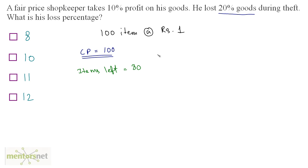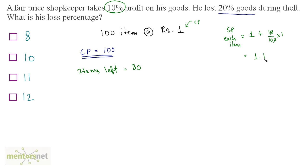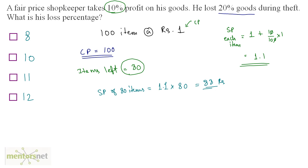Now let us calculate the selling price per item. The cost price per item is 1 rupee, and the shopkeeper takes 10% profit. So selling price of each item equals 1 plus 10% of 1, which is 1 + 0.10 = 1.1 rupees. The selling price of 80 items is 1.1 times 80 = 88 rupees.